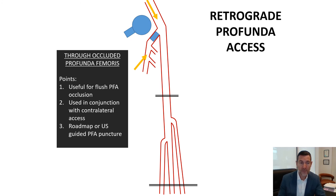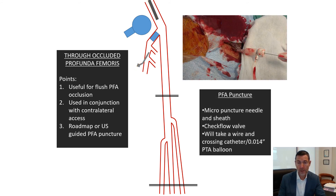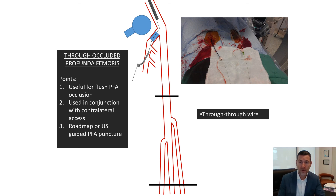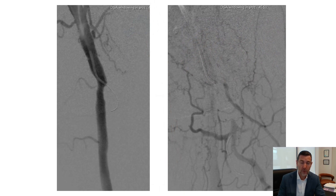Retrograde access of the profunda is useful for a flush profunda occlusion at the proximal end. This is always used in conjunction with a contralateral up-and-over access sheath, with puncture performed under roadmap or ultrasound guidance depending on leg size. A micro-needle is used to puncture, followed by the Cook micro-sheath system with an attached check-flow valve, which allows angiograms and crossing catheters from a retrograde approach. Once crossed retrogradely, the wire is externalised and taken through-and-through in the standard method, followed by antegrade revascularisation.